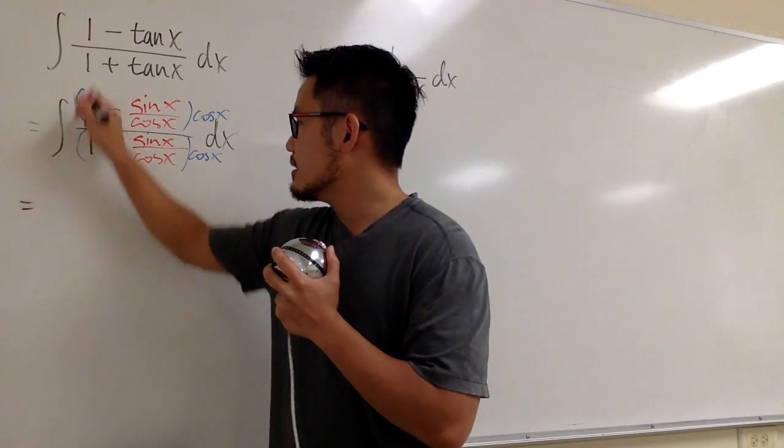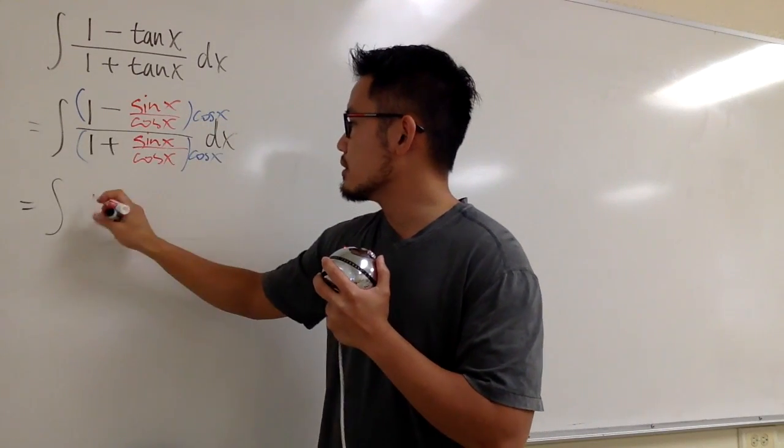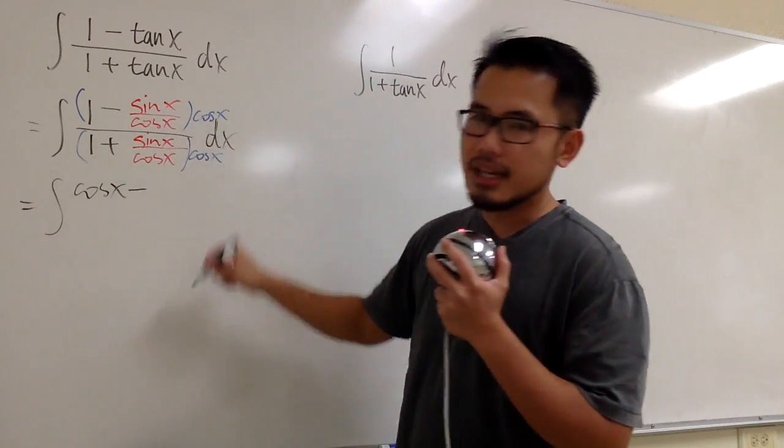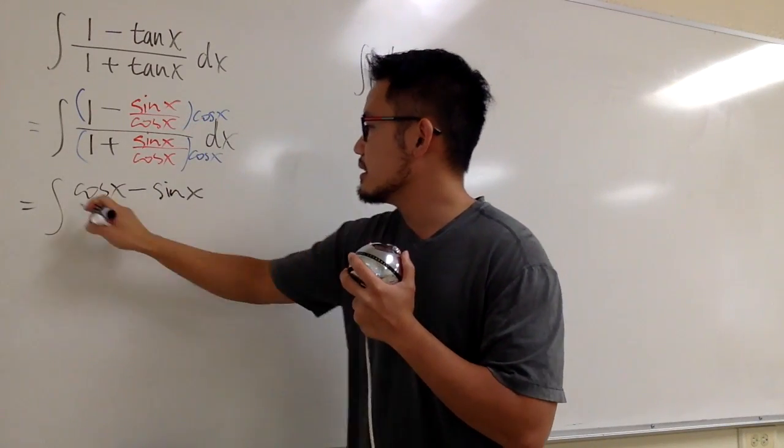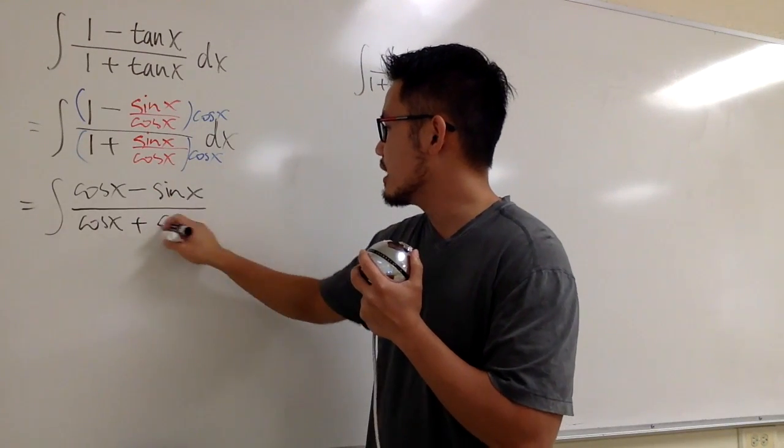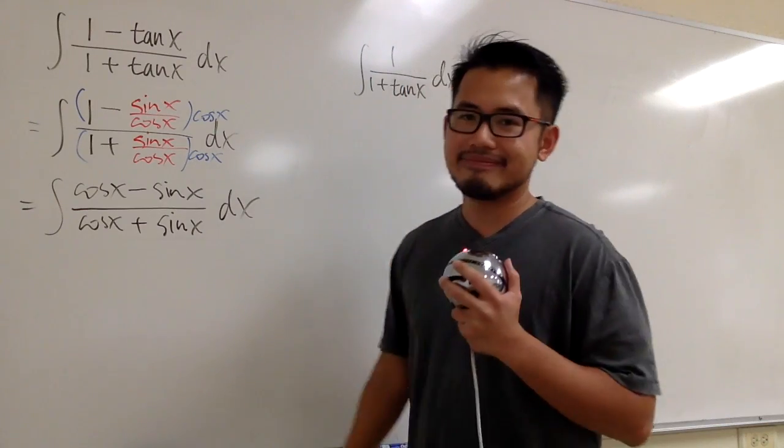Alright, after we do that, we will get the integral cos x times 1 is just cos x, right? And then this is minus sin x over cos x times cos x is just sin x. And this is over cos x times 1, so that's cos x. And then we add this times that, which is, once again, sin x dx.